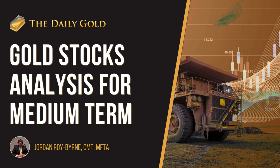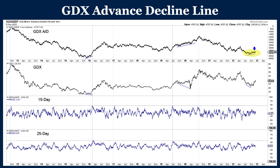And what we can look for that might signal that the next leg higher is underway. Of course, we look at plenty of things like fundamentals and price action and all of that. So I just have two charts here. First, focusing on the GDX advance-decline line and two things — the fact that it hasn't been so strong since the sector bottomed, and in the last two rows, the 15-day and 25-day, I'm creating an indicator which is known as a breadth thrust indicator.